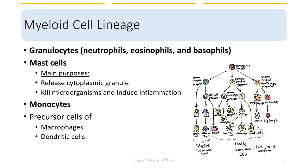Let's begin with the myeloid cell lineage. It forms common granulocyte precursors, which are common for all granulocytes — neutrophils, eosinophils, and basophils. It also forms a branch called mast cells, whose main purpose is to release cytoplasmic granules, kill microorganisms, and induce inflammation. We'll talk more about mast cells in later slides. The myeloid lineage also forms monocytes.